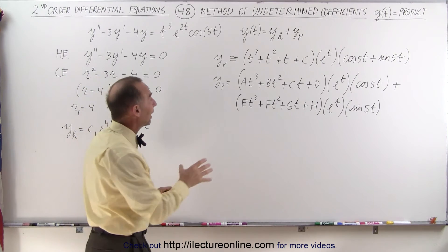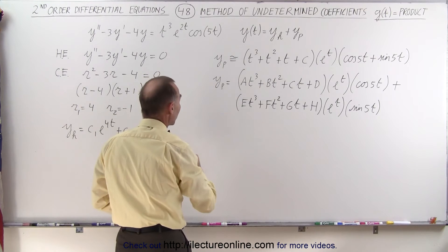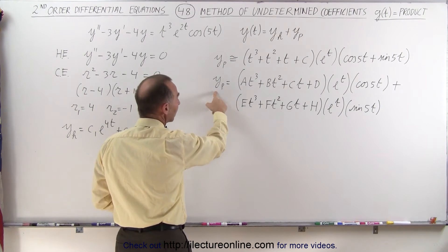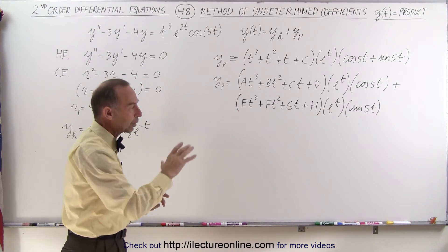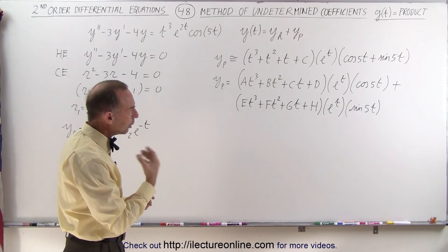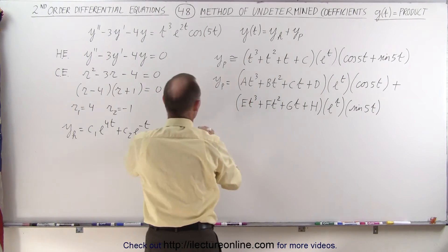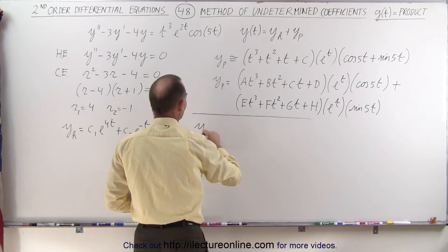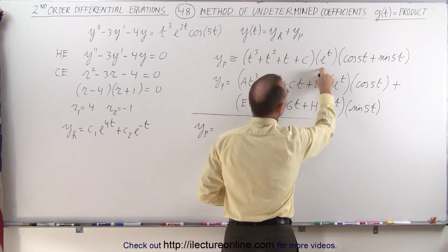Of course, we're going to do that by setting up eight separate differential equations, each with its own particular solution, then we add them all together, and then we have the total solution. Now we're not going to do that here — I just wanted to show you how to set that up. Another way to do that would be to go ahead and multiply everything out. We can say that the particular solution is going to be equal to the product of the polynomial, times e to the t, times the trig terms.